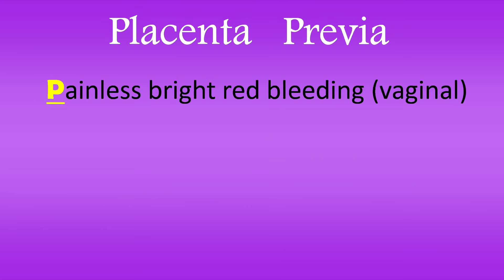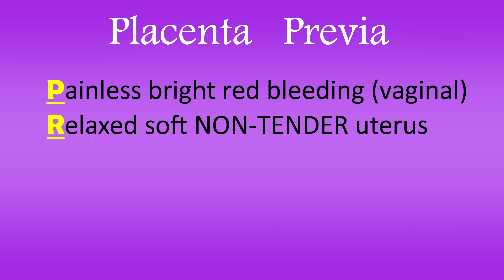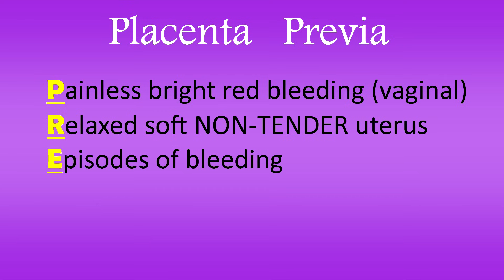Now Placenta Previa using PREVIA: P is for painless vaginal bright red bleeding, which can be mild to profuse — it's bright red, not dark like in Abruptio Placentae. R is for relaxed, soft, non-tender uterus — it won't be hard and rigid like the other condition. E is for episodes of bleeding, not just spotting, most likely occurring in the third trimester as the cervix thins, tearing vessels in the placenta and causing that bright red bleeding.